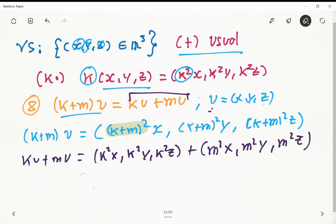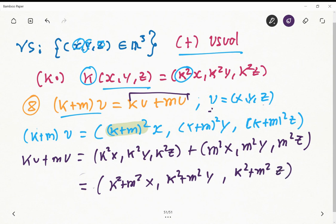After we sum these vectors together, we got k squared plus m squared x, k squared plus m squared y, and k squared plus m squared z.